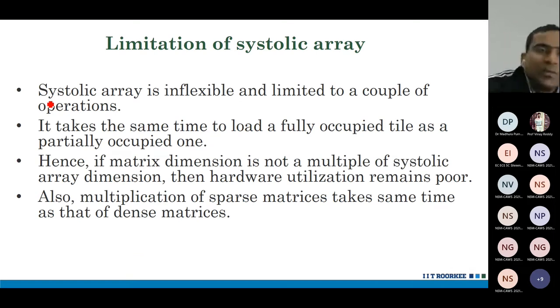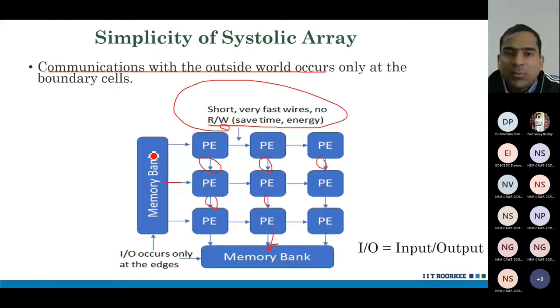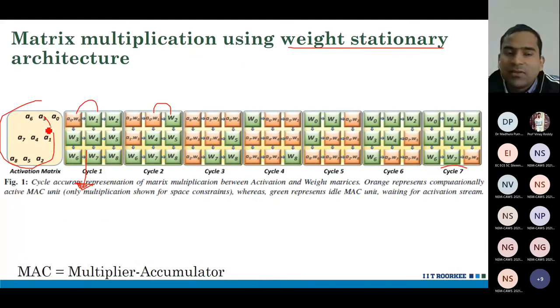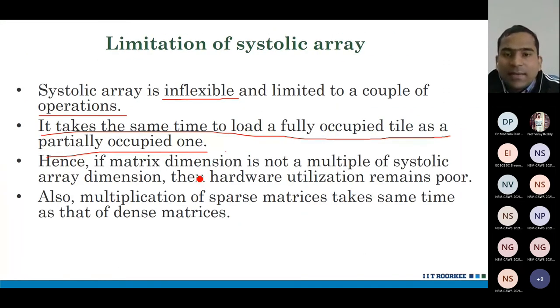However, because it is so simple, it is very mean. It is inflexible. You can't do other operations on this. It is limited to a couple of operations. It takes the same time to load a fully occupied tile as a partially occupied tile. That means even if some of those values were to be zero, if some of those values were to be zero, you won't save time. You can't do any optimization there. If the matrix dimension is not a multiple of systolic array dimension, then hardware utilization remains poor.